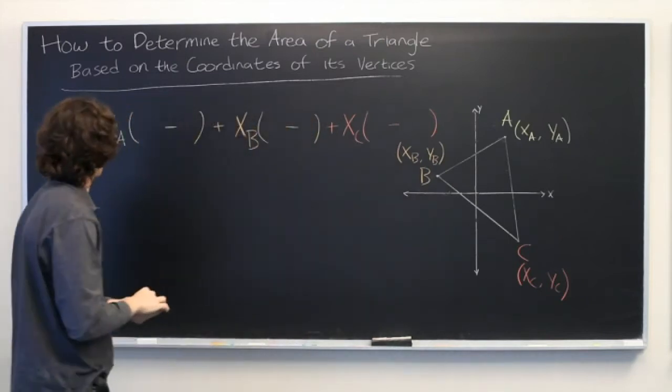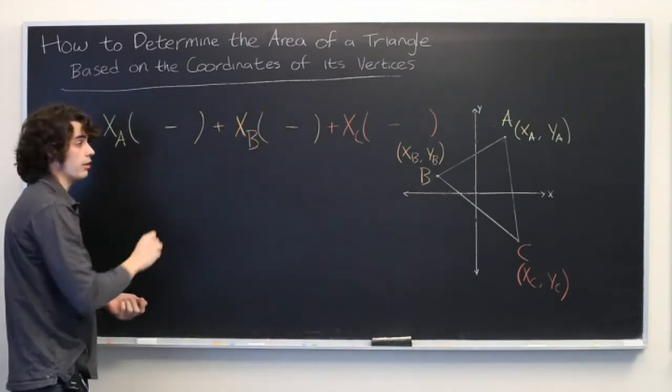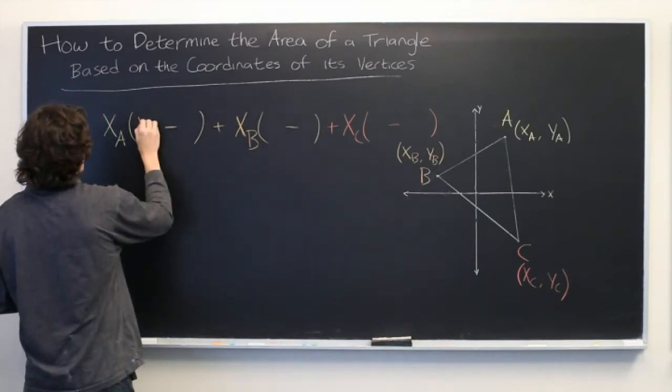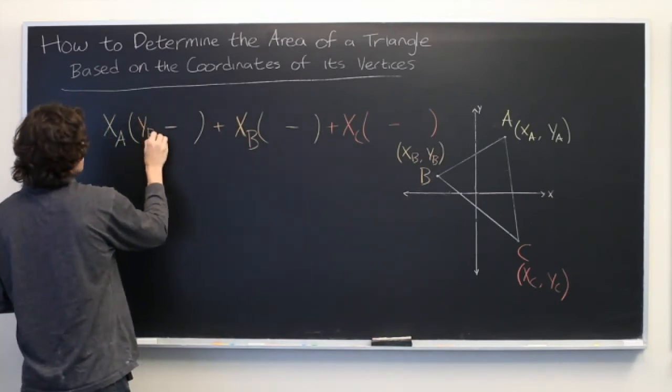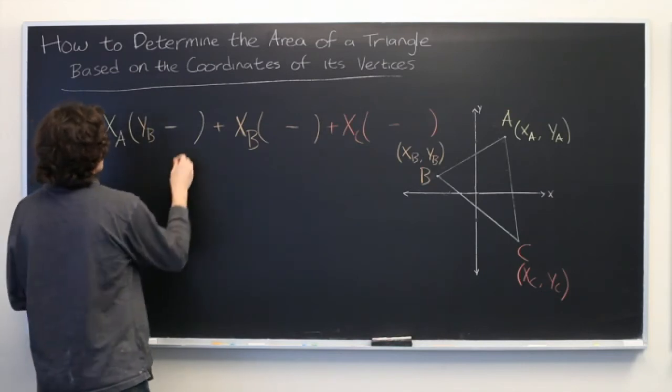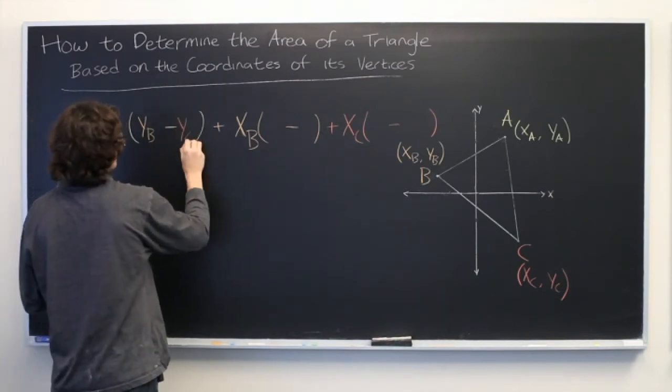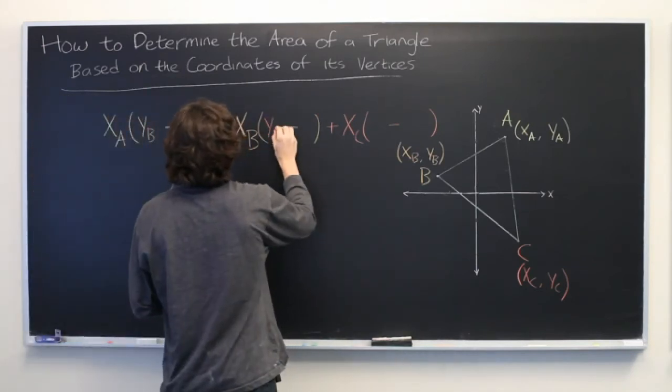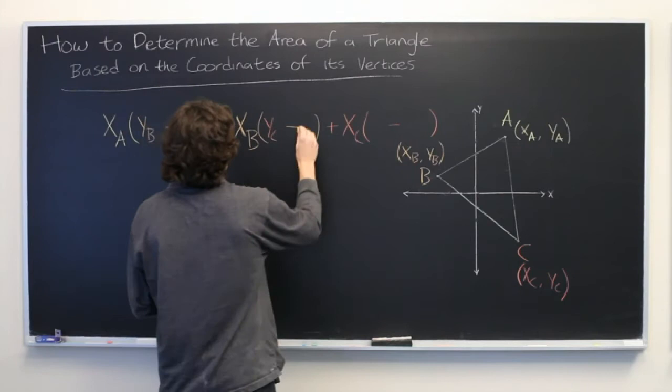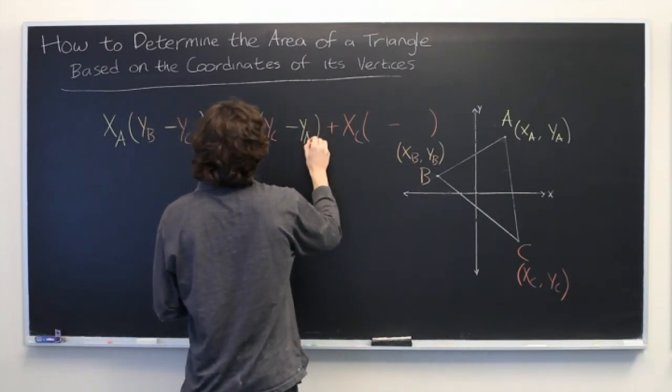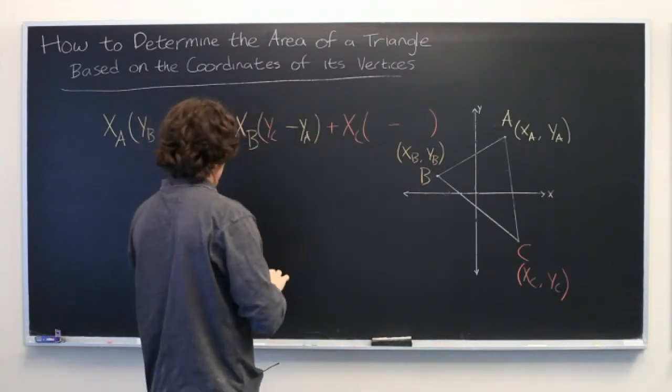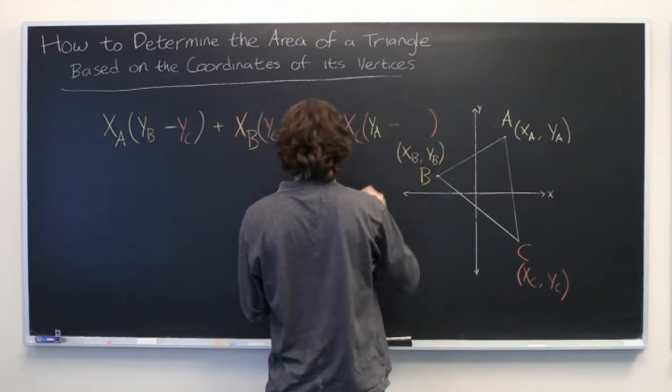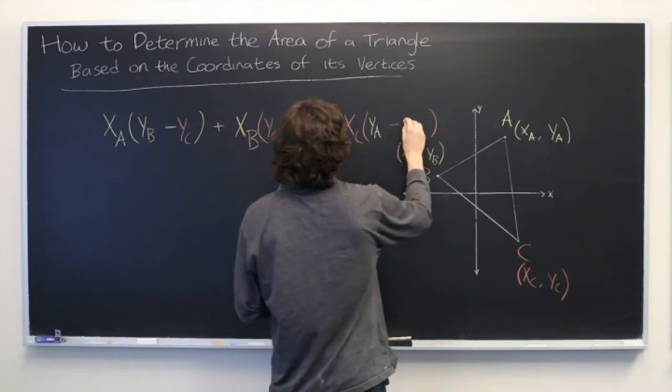Okay. Now, let's fill in these values. So, in here, we have YB minus YC. Then we have YC minus YA. Finally, we have YA minus YB.